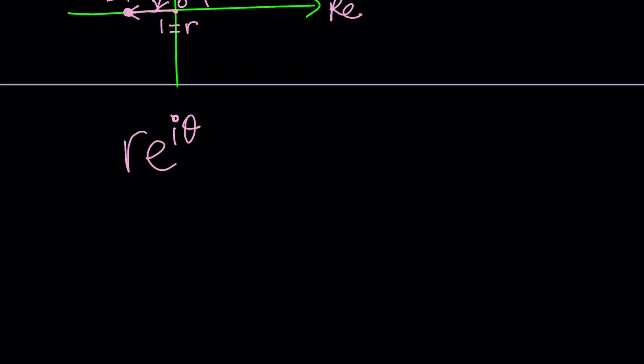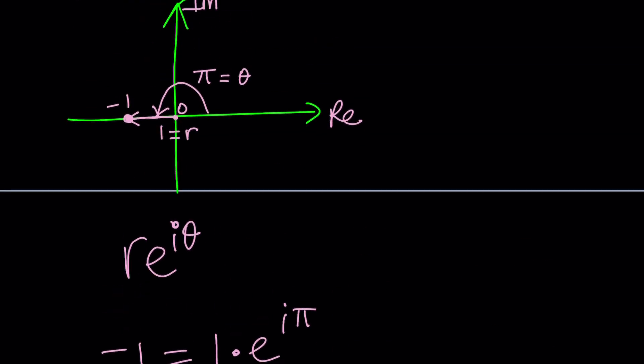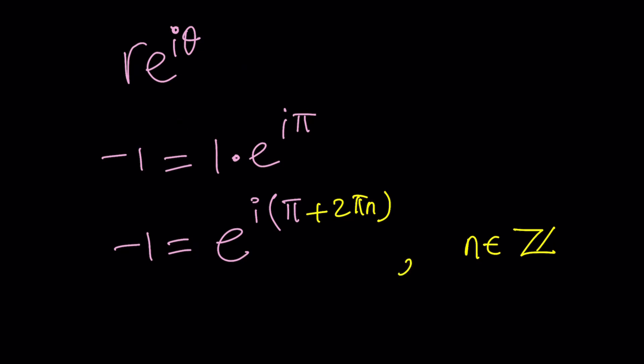So negative 1 can be written as e to the power i pi, but not just pi, because you're allowed to add multiples of 2 pi. So I'm just going to add 2 pi n, where n is an integer, and can be positive or negative, because you can basically make rotations. If I start here and add 2 pi to this angle, it's going to bring me to the same point. We've taken care of negative 1, now let's take care of i.